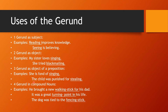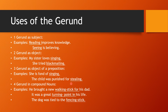Gerund as object of a preposition. Examples: 'She is fond of singing.' 'The child was punished for stealing.' Singing and stealing are gerunds. She is fond of what? Singing. The child was punished for what? Stealing. This is gerund as object of a preposition because it comes after the prepositions 'of' and 'for'.